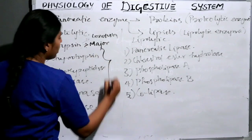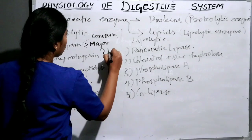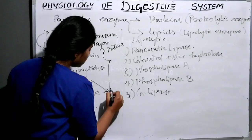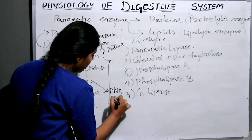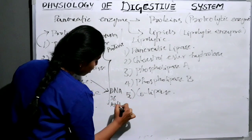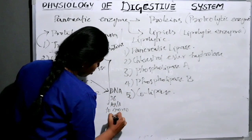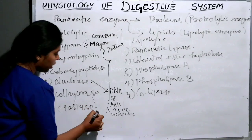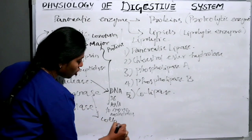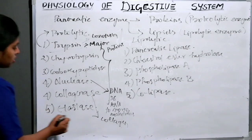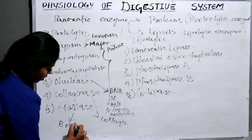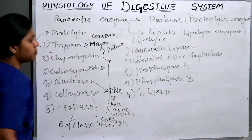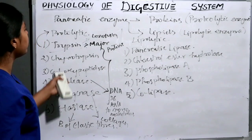All these enzymes help in the breakdown of proteins. Nuclease helps in the breakdown of DNA and RNA to mononucleotides. Collagenase helps in the breakdown of collagen. Elastase helps in the breakdown of elastic fibers. That covers all the proteolytic enzymes.